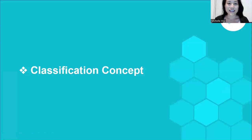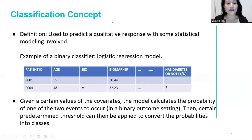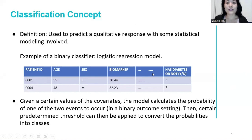Classification is very popular in today's precision medicine and genomics. By definition, classification is used to predict a qualitative response with some statistical modeling involved. As a starting point, you receive a new set of data about your patient's age, sex, some biomarker values, and you want to predict whether the patient is diabetic or not. So you have two possible outcomes and a set of variables.